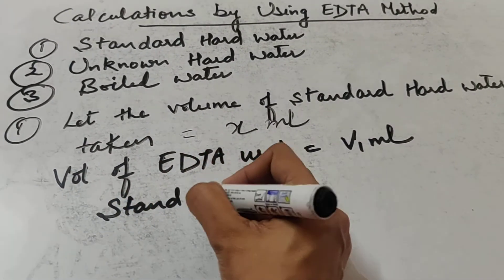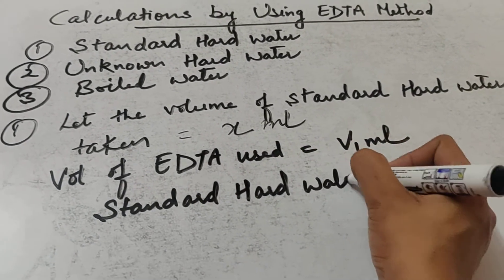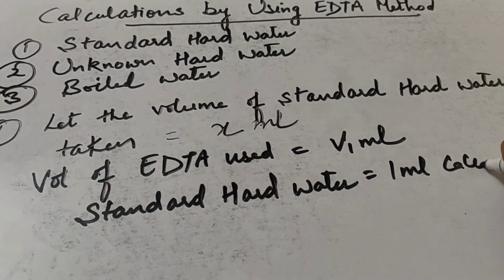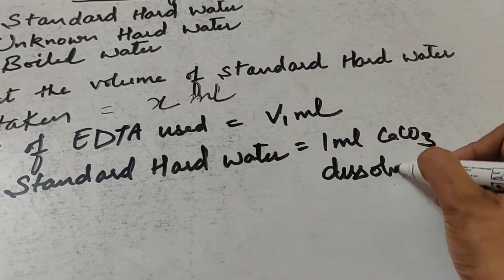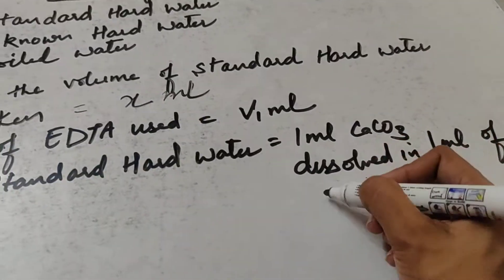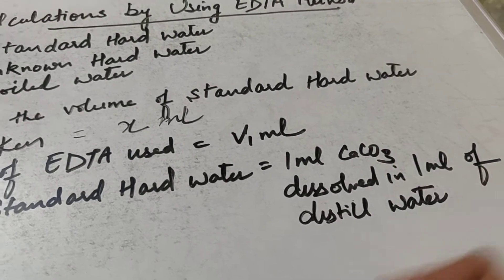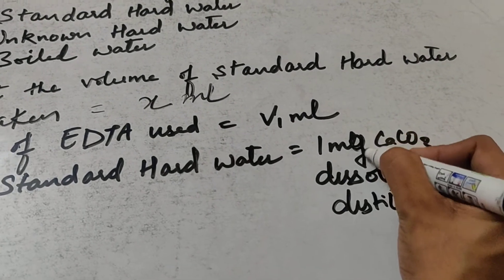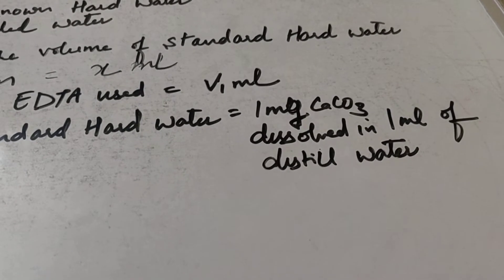Standard hard water is prepared by standardization. What happens is: 1 mg of CaCO₃ is dissolved in 1 ml of distilled water. When you dissolve 1 mg CaCO₃ in 1 ml distilled water, the resulting solution is known as standard hard water.